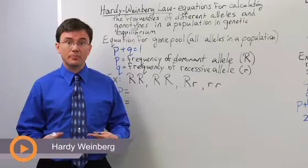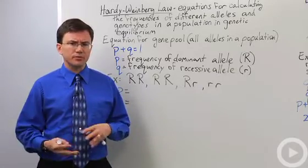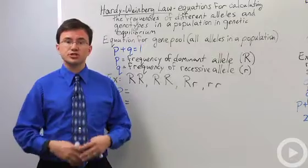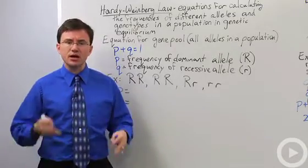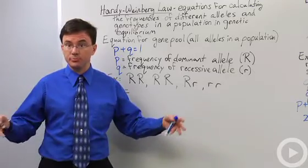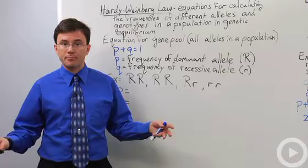One of the basic things in population genetics is a concept known as the Hardy-Weinberg Law. The Hardy-Weinberg Law is a collection of two equations that is used to mathematically calculate the frequencies of alleles within the gene pool of a population and the frequency of genotypes within that population.